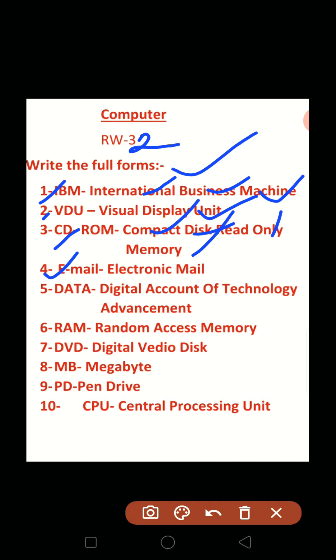Number four: email — Electronic Mail. Fifth: DATA — Digital Account of Technology Advancement. Six: RAM — Random Access Memory.